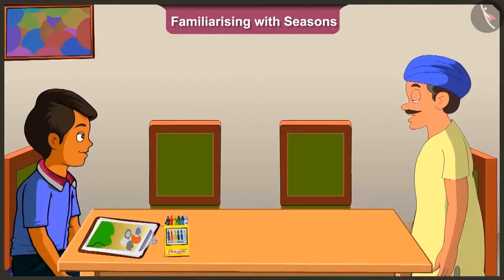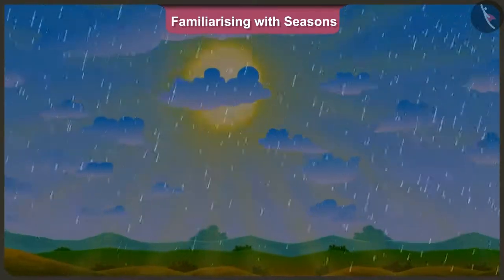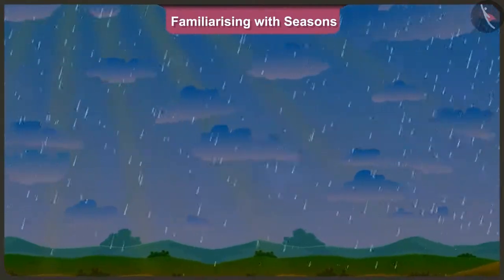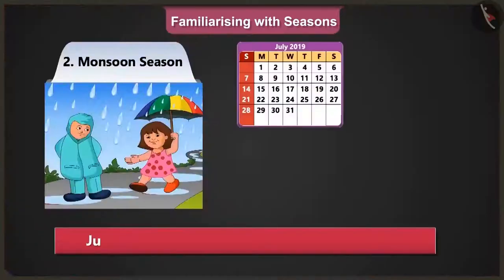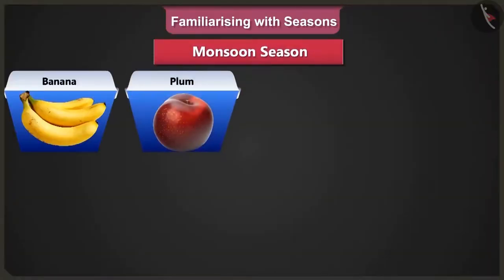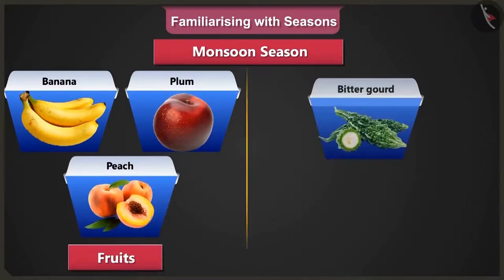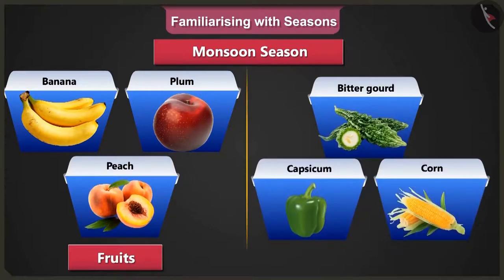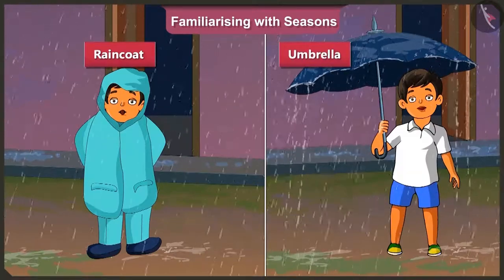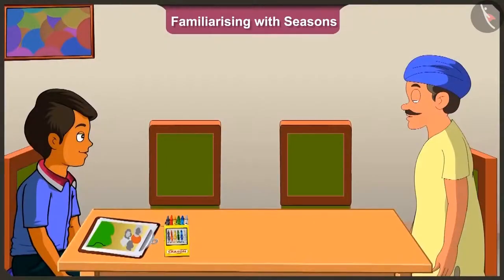Chotu, after the summer season, the monsoon season arrives. It rains a lot in this season, and sometimes the sun hides behind the clouds. July, August, September are the rainy months. In this season, bananas, plums, and peaches are the fruits. In this season, we use raincoats and umbrellas to avoid getting wet in the rain.